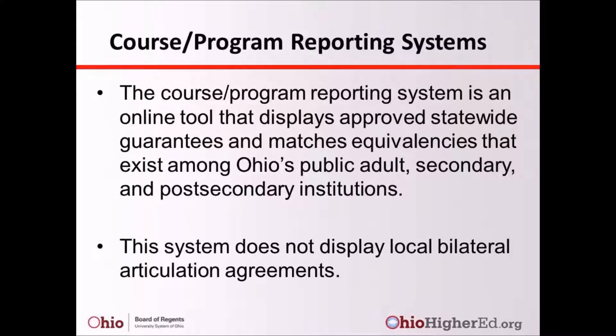The course or program reporting system has two primary purposes: first, to display approved statewide guarantees, and second, to compare equivalencies that exist among Ohio's adult, secondary, and public post-secondary institutions. This system does not display local, bilateral, or articulation agreements.